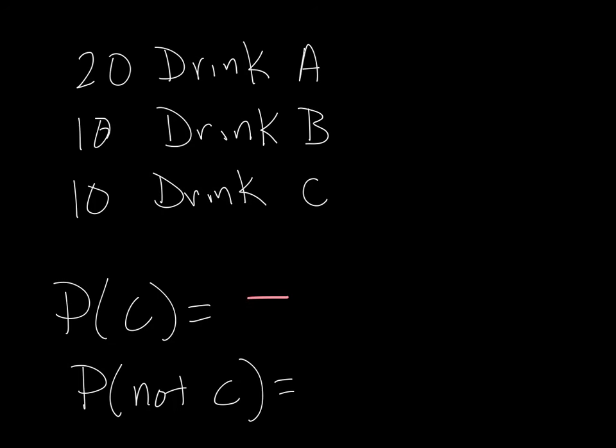Well, let's think about how many possible outcomes are there. There's 40 people to choose from. And how many of those are considered to be favorable? In other words, how many of them have drink C? Well, there's 10. And this reduces to one-fourth.